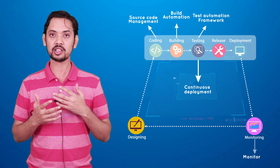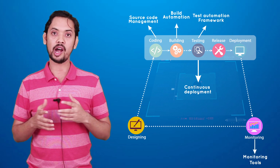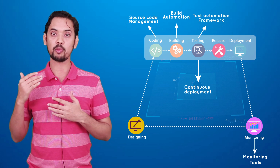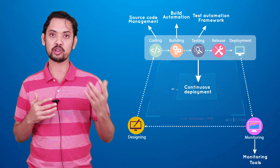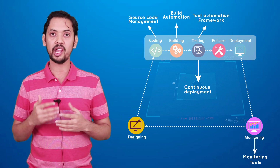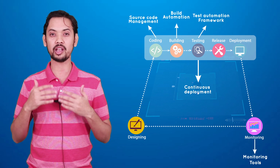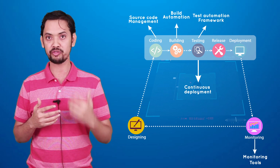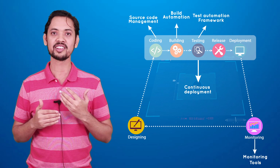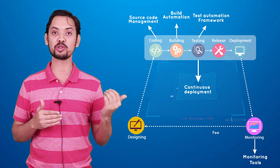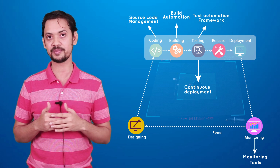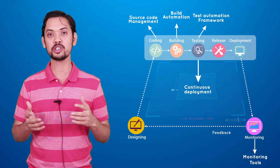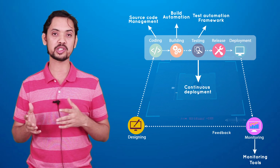DevOps doesn't end with continuous deployment. After deploying your product, monitoring tools should start monitoring your application and generating data. That data is used for planning the next feature, making the feedback loop go back to the design phase. This continuous paradigm is not possible without automation and integration of various stages.